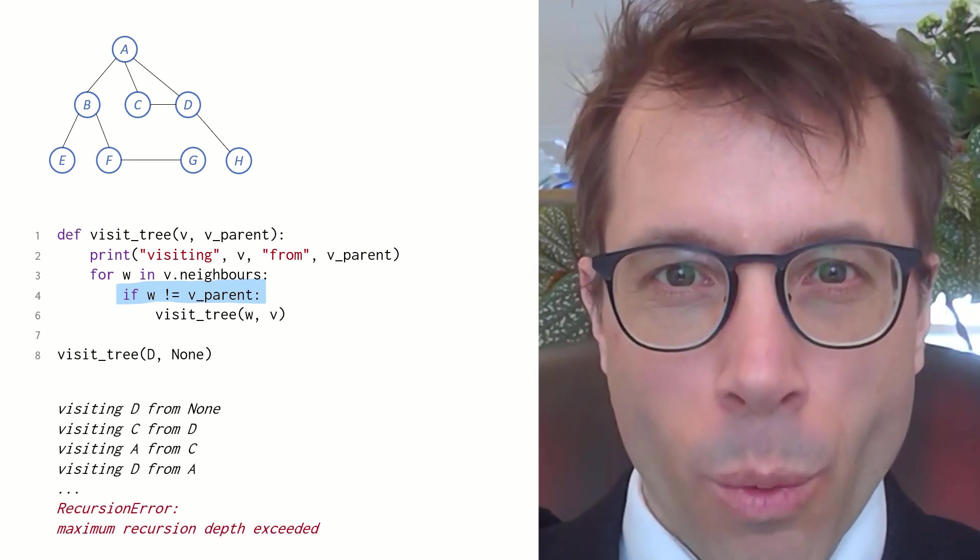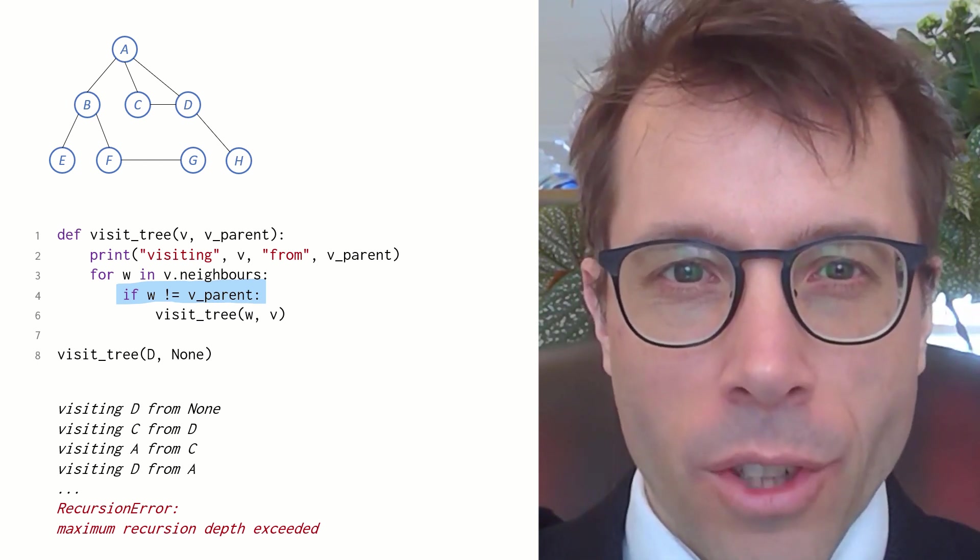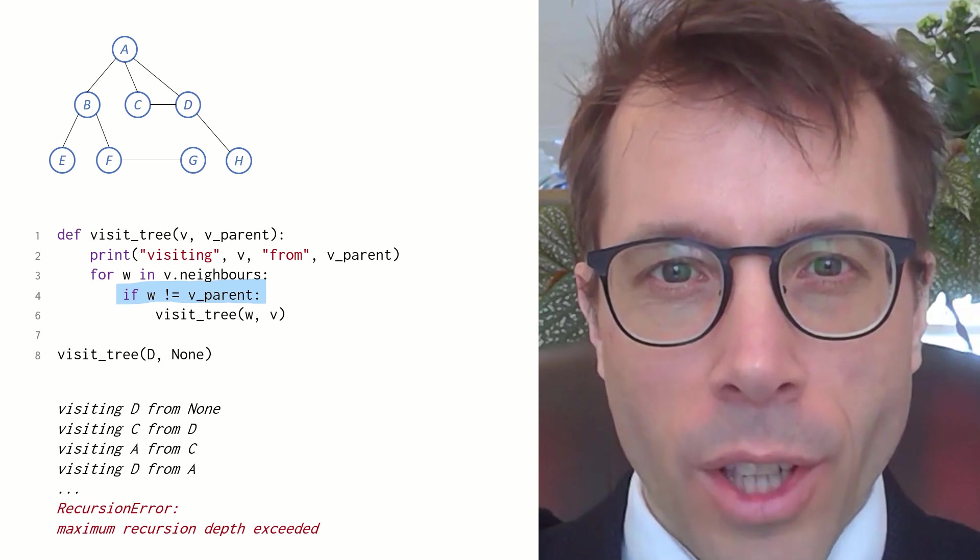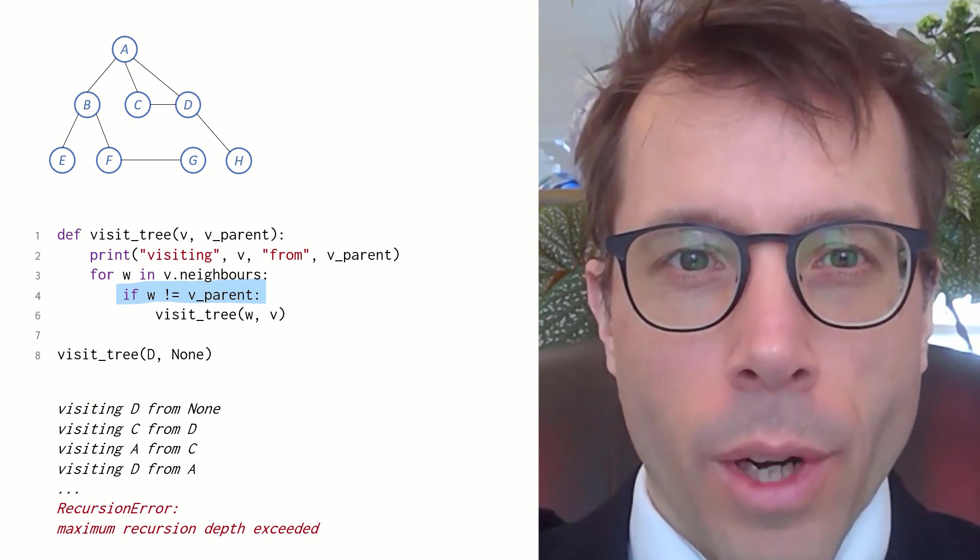Another recursion error. This would have worked if we were running it on a tree, but I snuck in an extra edge between c and d, so this graph has a cycle d, c, a, d, and the algorithm gets stuck in an infinite loop going round and round the cycle.